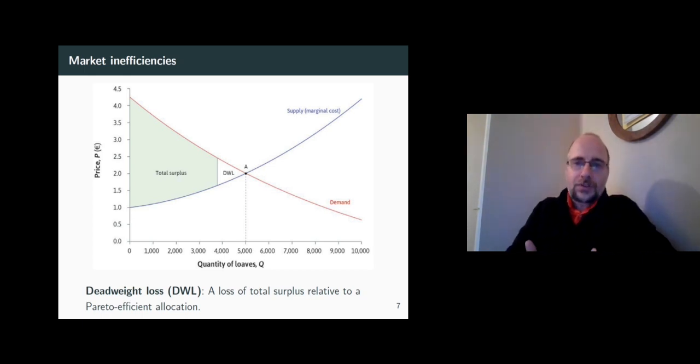It is a loss because the market could have produced the surplus if it was in equilibrium, right? But for various reasons, it's not in equilibrium. The market is not equilibrium. And as a result, the market cannot produce this extra surplus. It is exactly this extra surplus that the market could have produced, but it did not produce for any reason, that we call the deadweight loss.